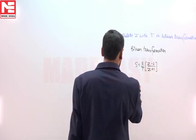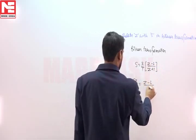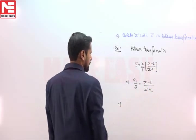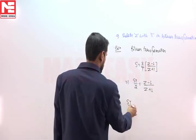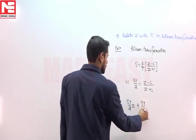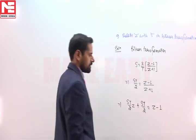So we can write st divided by 2 will be equal to z minus 1 upon z plus 1. We can write st by 2 into z plus st by 2 will be equal to z minus 1.